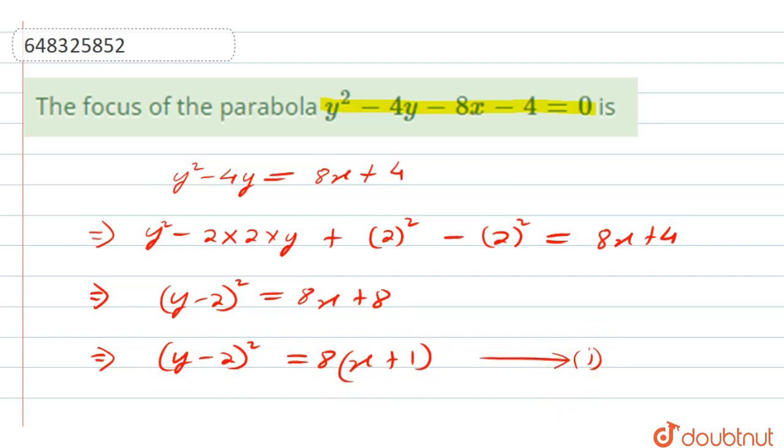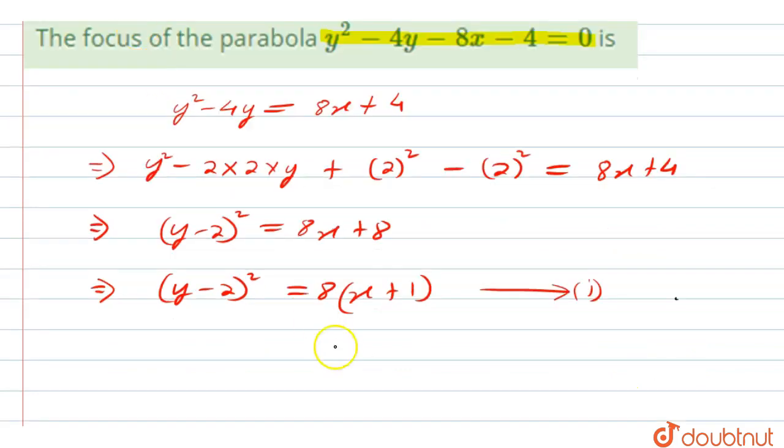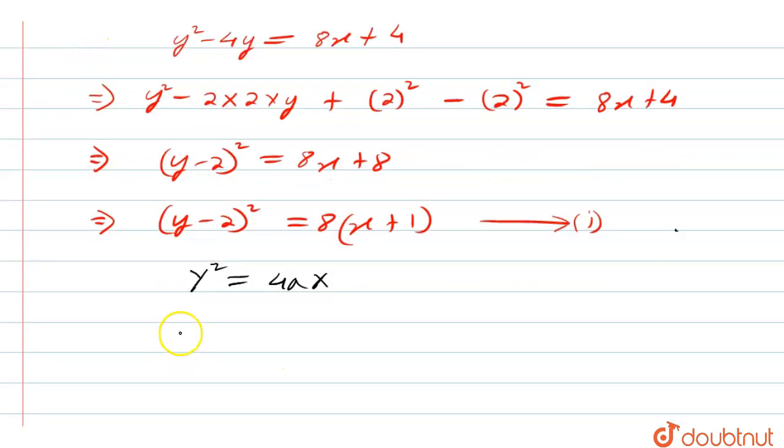Now if we compare this with the equation of parabola, that is standard equation capital Y squared equal to 4a capital X, then we will get capital Y equal to y minus 2 and capital X equal to small x plus 1 and 4a equal to 8, that means a equal to 2.